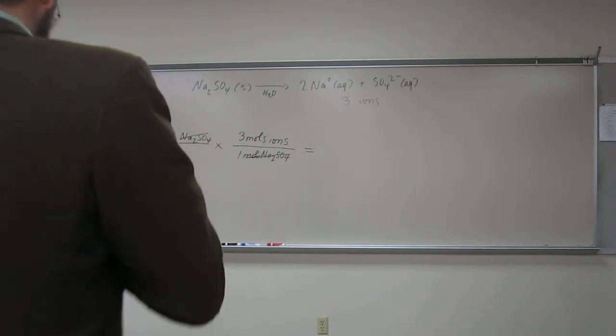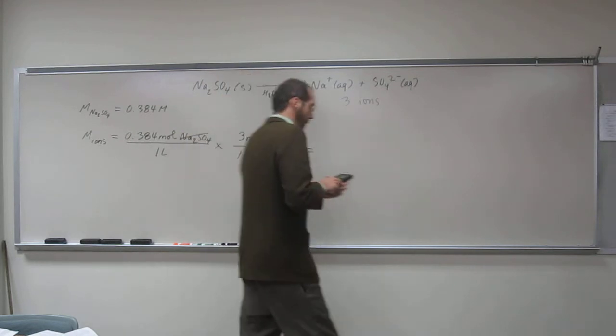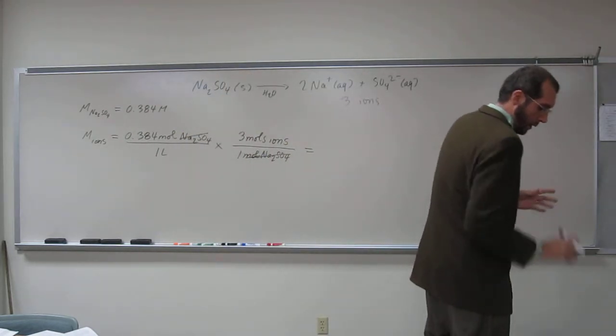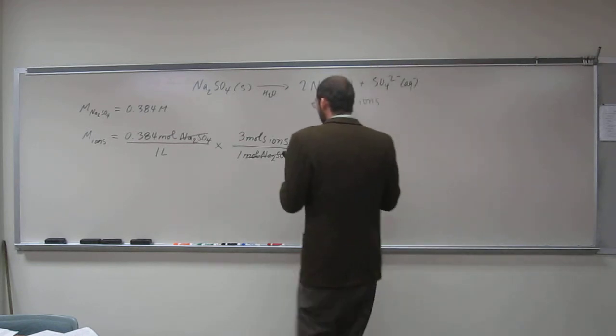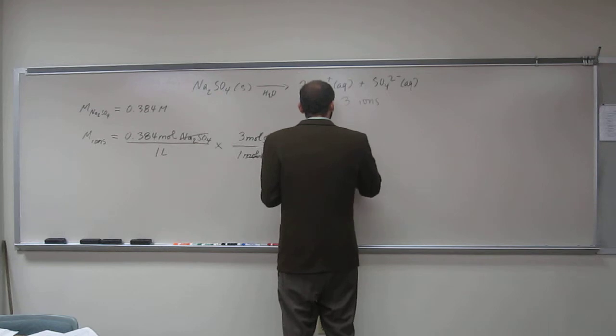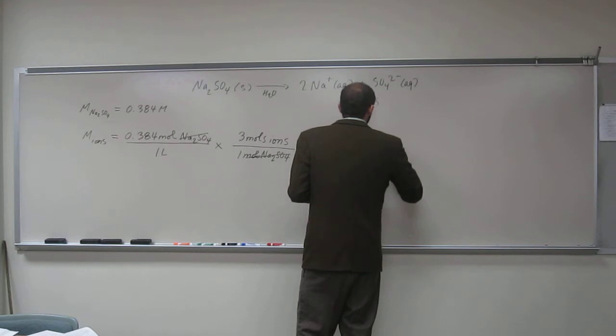0.384 and multiply it by three. So the total molarity of ions to three sig figs is 1.15 molar in ions.